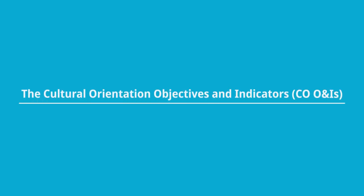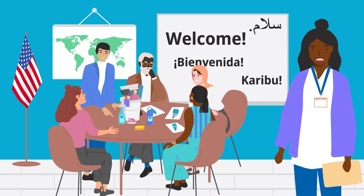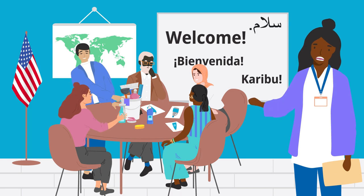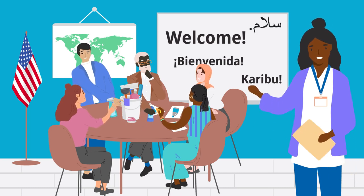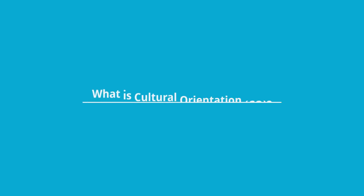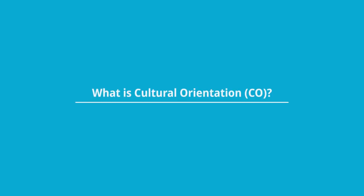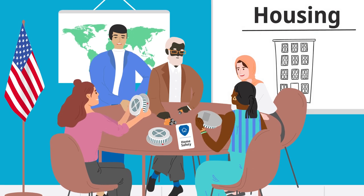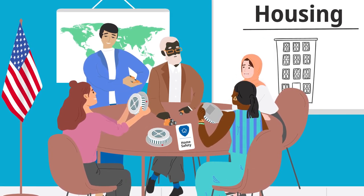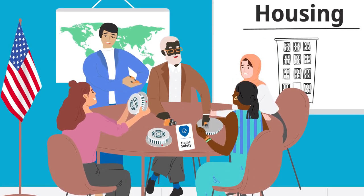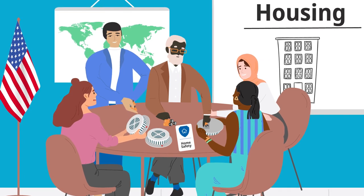The Cultural Orientation Objectives and Indicators. There's so much that refugees need to learn about life in the U.S. — where do we start? Cultural Orientation, often called CO, is an education program where refugees get information on how to adapt to their new lives and achieve self-sufficiency in the U.S.